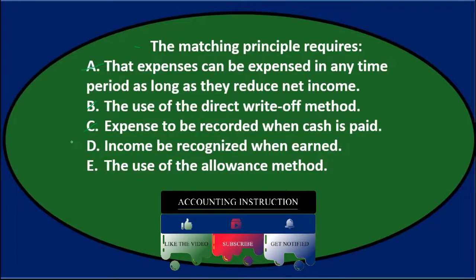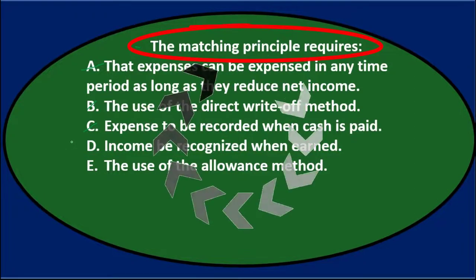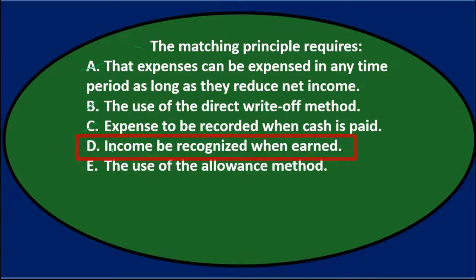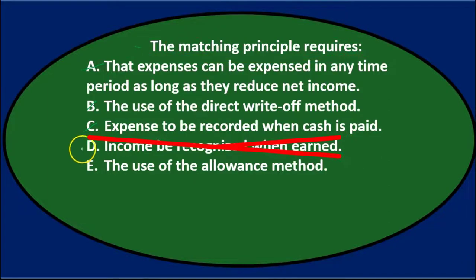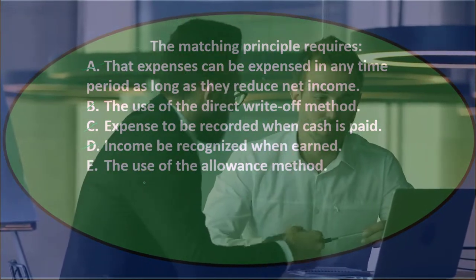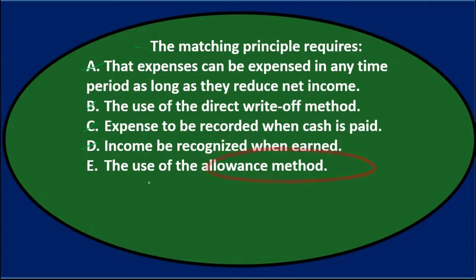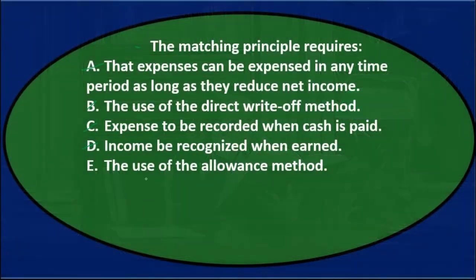We're left with D and E. The matching principle requires D — income be recorded when earned — or E — the use of the allowance method. D actually relates to the revenue recognition principle, the other major accrual principle, which concerns the revenue side. The matching principle concerns timing on the expense side. The allowance method applies the matching principle by matching bad debt expense with the related income that generated it in the same time period. So E is the most correct answer — the matching principle requires E, the use of the allowance method.